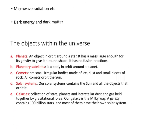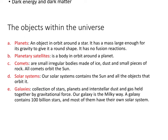For your course, OCR A A-Levels 2009 spec, we are looking at a few objects within the universe: planets, planetary satellites, comets, solar systems and galaxies. For a planet to be classified as a planet, it is a massive object in orbit around a star. It will have a large enough mass for its own gravity to give it a round shape, and there are no fusion reactions taking place in planets. A planet will have cleared its path around a star from any other objects by gravitationally attracting them.